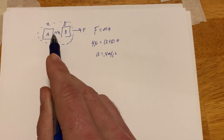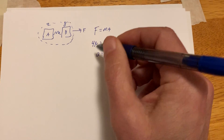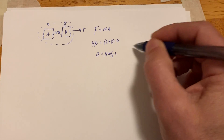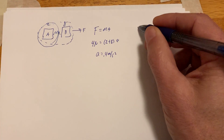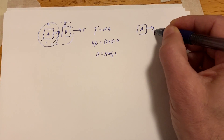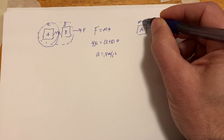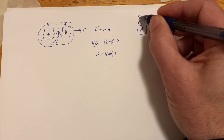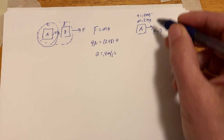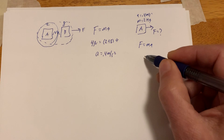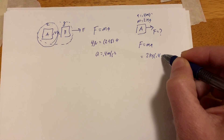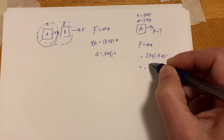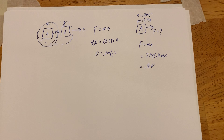I'm looking for the force this spring is pulling on A. Let's just look at A by itself. The mass is 2 kilograms and I know the acceleration is 0.4 meters per second squared. F equals MA: 2 kilograms times 0.4 meters per second squared gives me 0.8 Newtons. So that's the force being pulled on A.